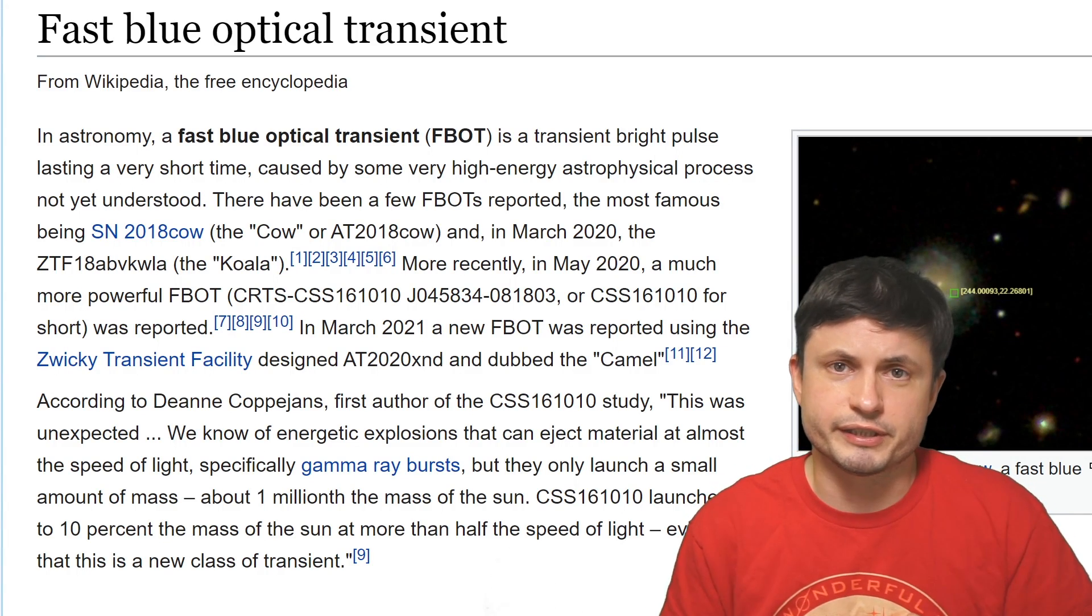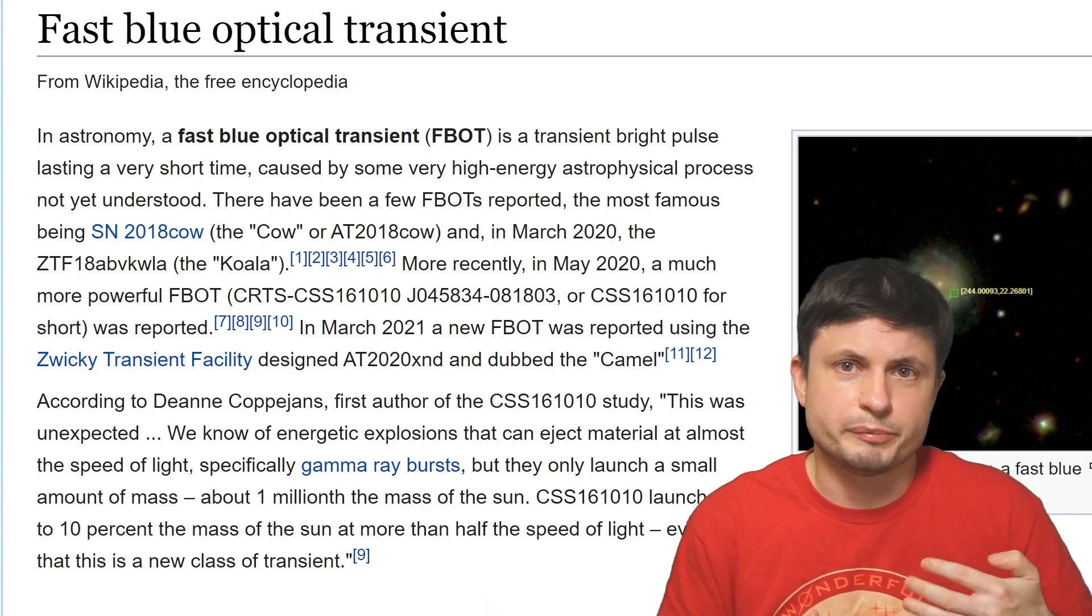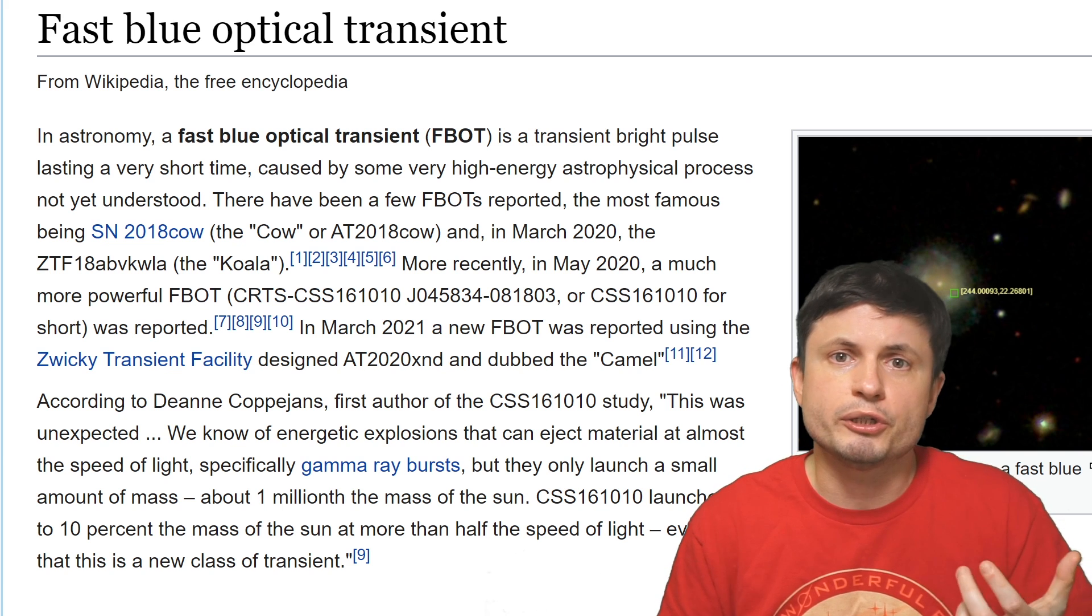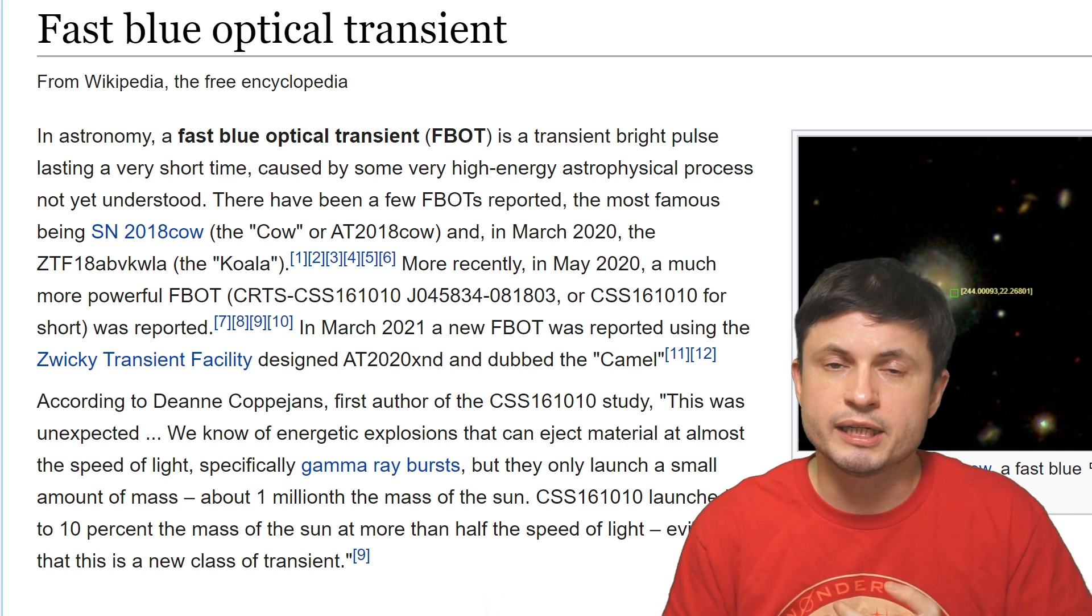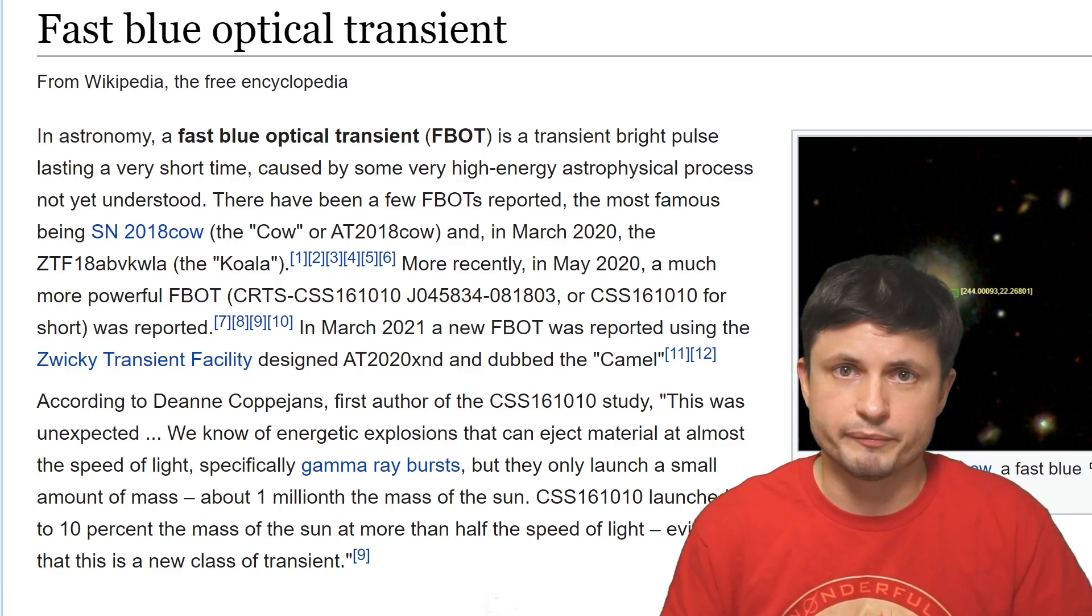First of all, the word transient in this case refers to some sort of space phenomenon that seems to appear and disappear relatively quickly. In most cases these are usually supernovae. But in the past there have been transients that either did not have a good explanation or that would just appear in certain frequencies of light, such as radio light.